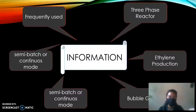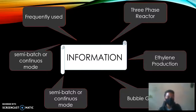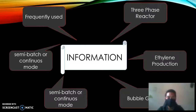It consists of a catalyst suspended in a liquid through which gas is bubbled. The slurry loop reactor can operate in either semi-batch or continuous mode. It is most frequently used when a liquid reactant must be contacted with a solid catalyst and when a reaction has a high heat of reaction.